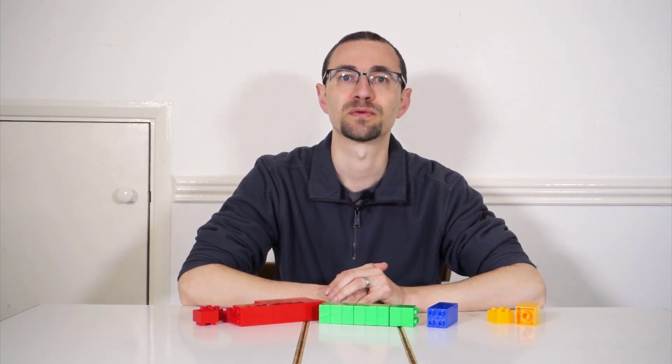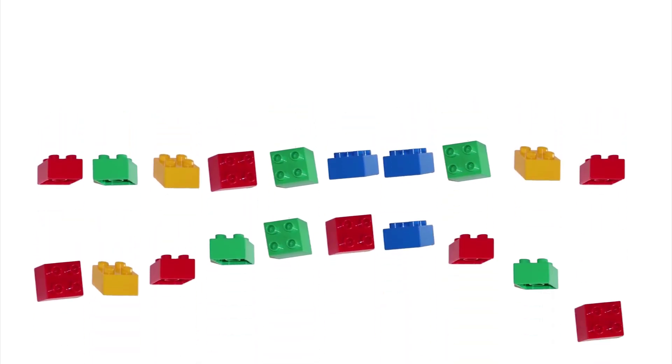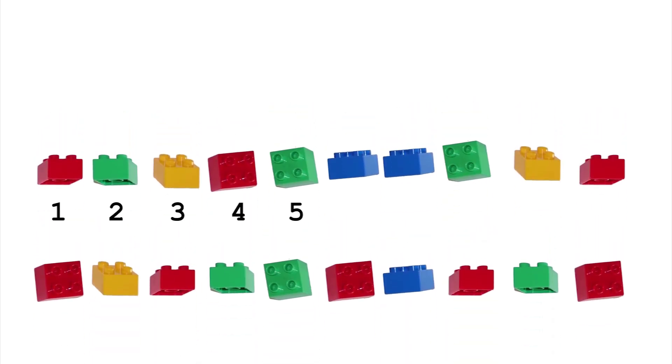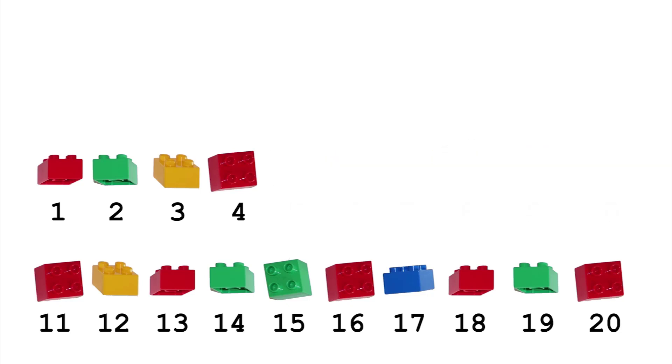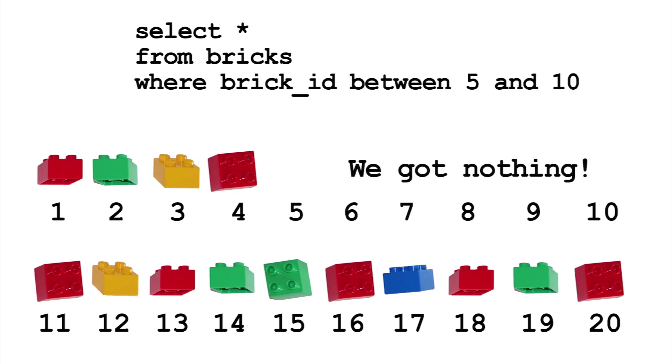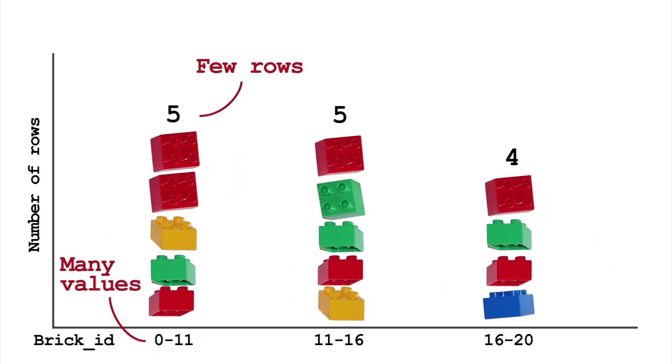It's time to discuss range skew. This occurs when there's an uneven spread between the values. Say we've numbered the bricks starting at one. Currently, the values are all consecutive. But if we now chuck away these bricks, there's a hole in the numbers. So if we search for values between 5 and 10, we'll get no rows back. Adding a histogram helps identify these missing values.